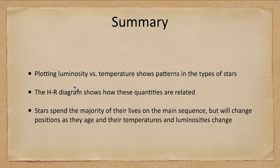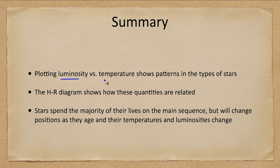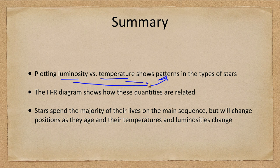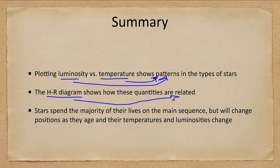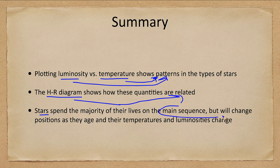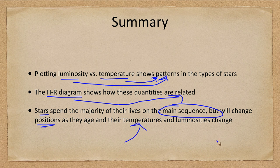Let's look at our summary. We plot the luminosity and temperature and that gives us patterns that we see in the different types of stars. The HR diagram shows how these quantities are related, and we find that stars spend most of their lives on the main sequence but will change position as they age, which means their temperatures and luminosities will change.